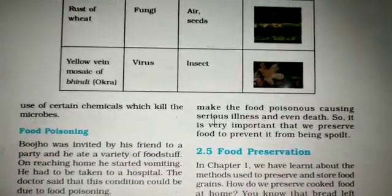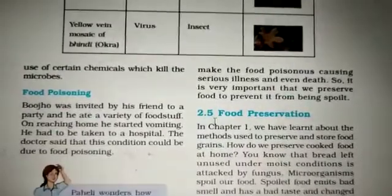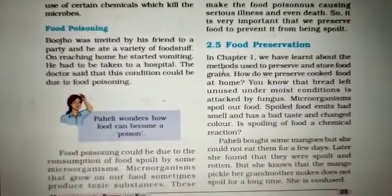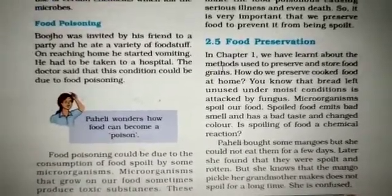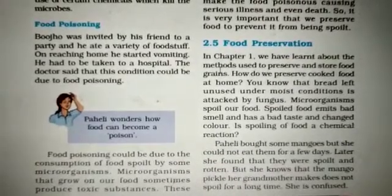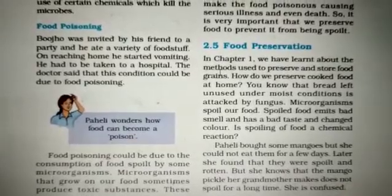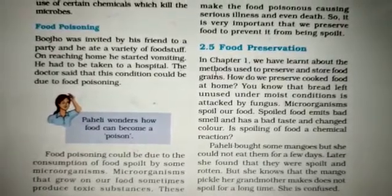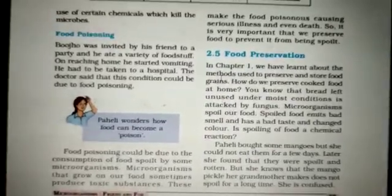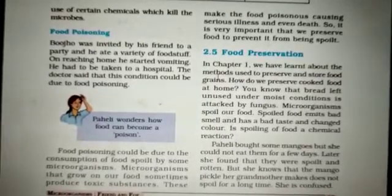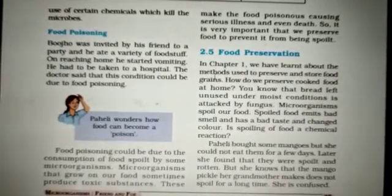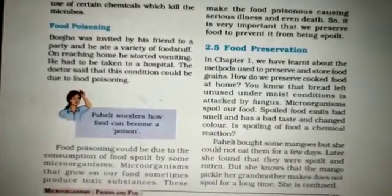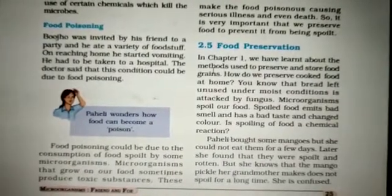The next harmful aspect of microorganisms is food poisoning. Food poisoning could be due to the consumption of food spoiled by microorganisms. If you keep cooked food outside for some hours, you can see a foul smell and sometimes fungus — especially on bread and chapati left outside for a long time, you can see a powdery substance on them. These microorganisms that grow on our food sometimes produce toxic substances, making food poisonous and causing serious illness and even death. So it is very important that we preserve food to prevent it from being spoiled.